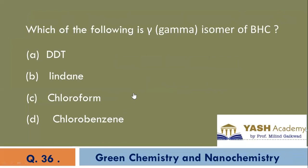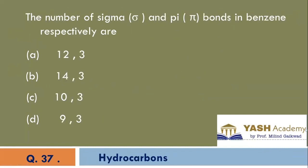Which of the following is gamma isomer of BHC? Lindane is the gamma isomer of benzene hexachloride. This is the structure of benzene hexachloride. Correct option is B, lindane.